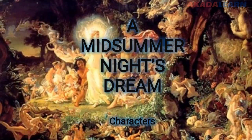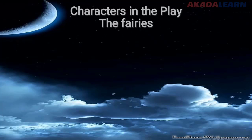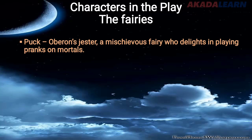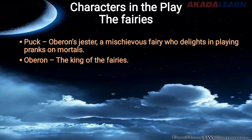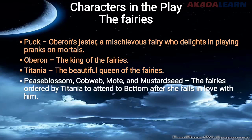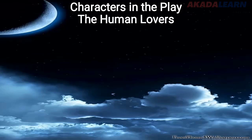Now let us look at the characters in this lovely play. The characters are grouped. The first set is the fairies. First is Puck — Puck is Oberon's jester, a mischievous fairy who delights in playing pranks. Next is Oberon, the king of the fairies. Then Titania, the beautiful queen of the fairies. And then we have Peaseblossom, Cobweb, Moth, and Mustardseed — the fairies ordered by Titania to attend to Bottom after she falls in love with him.